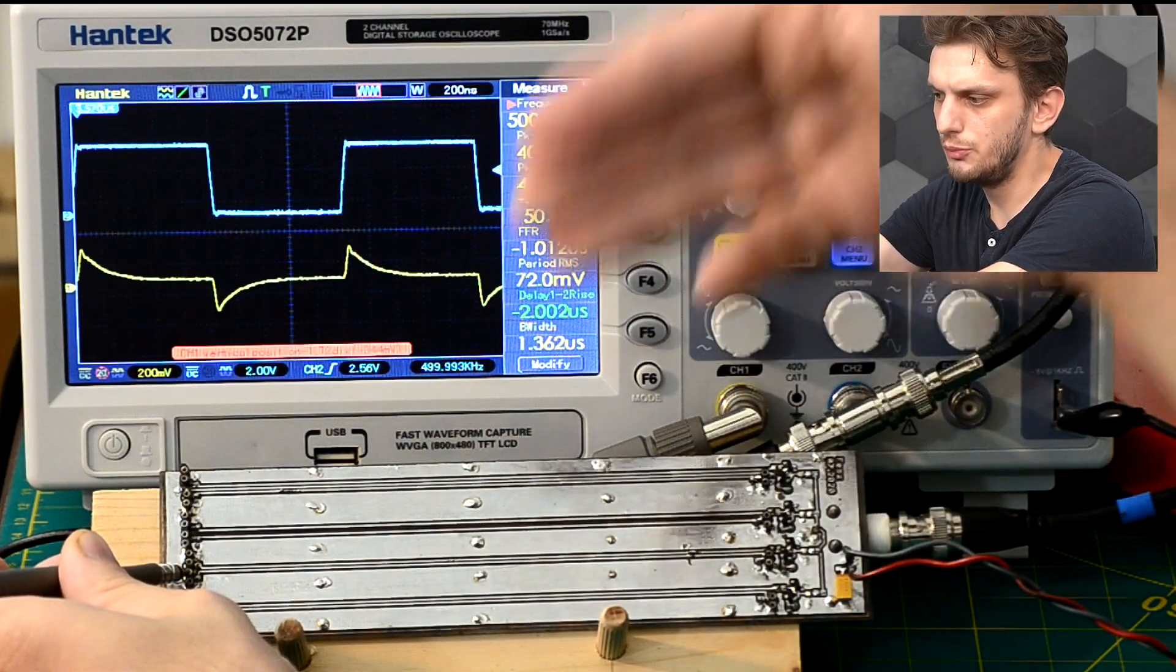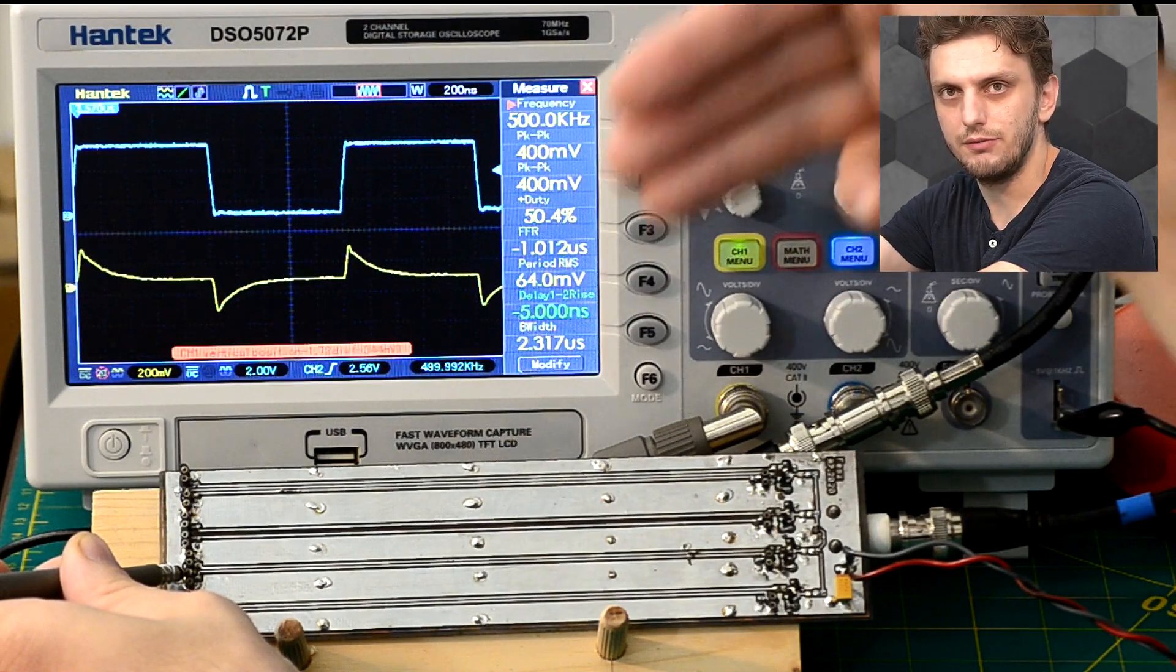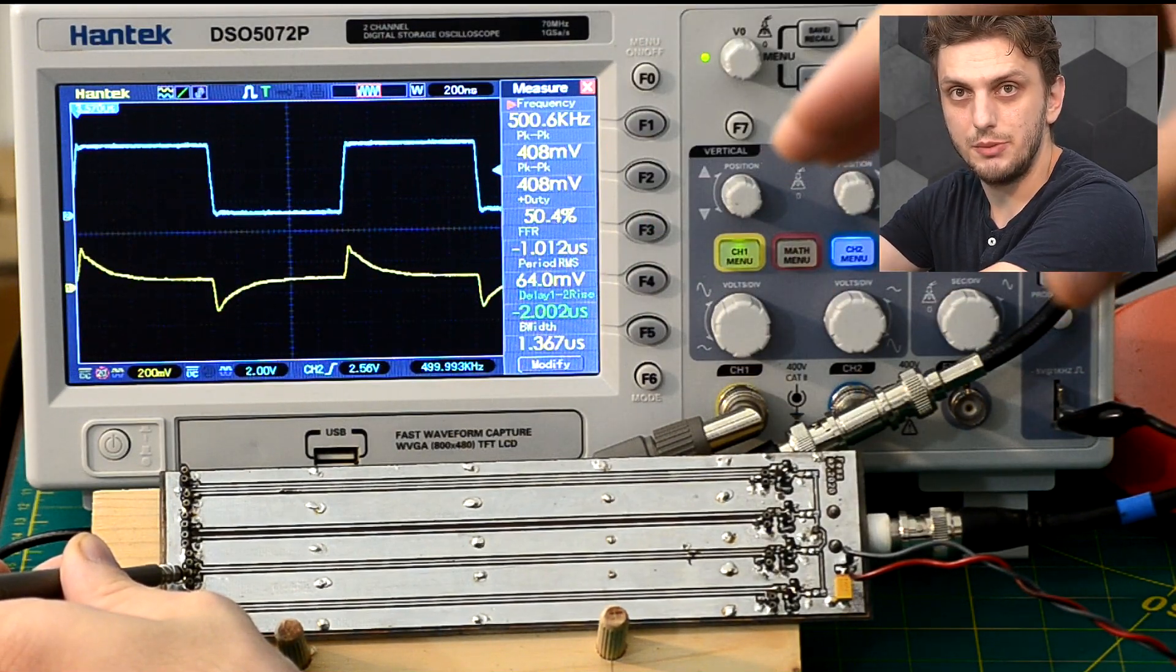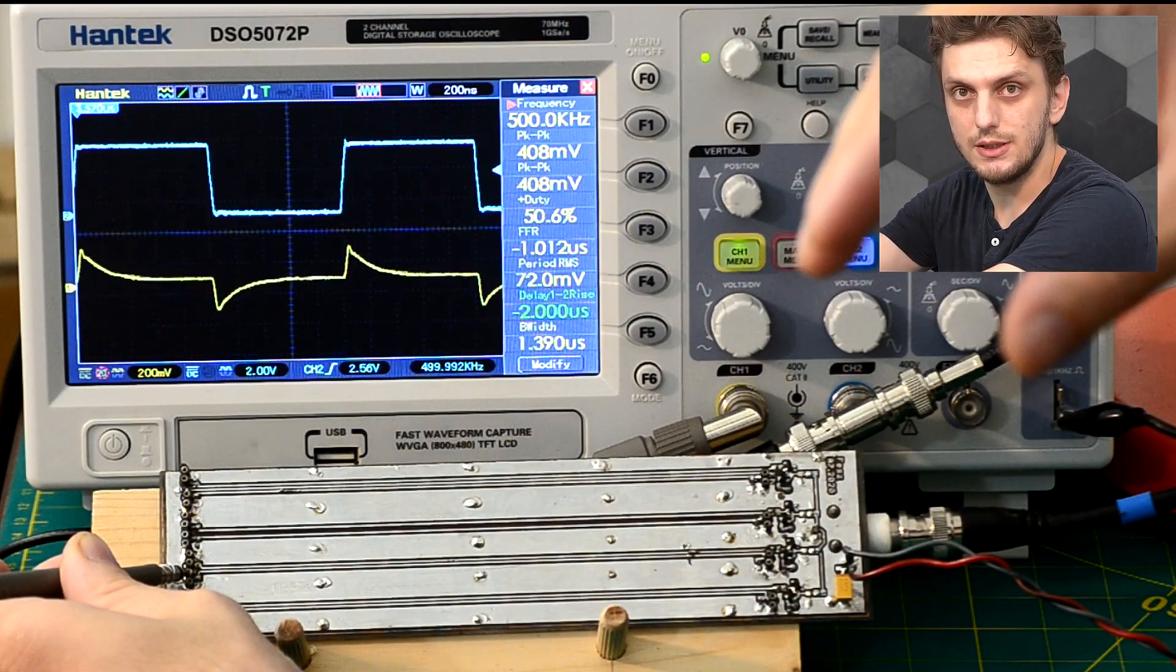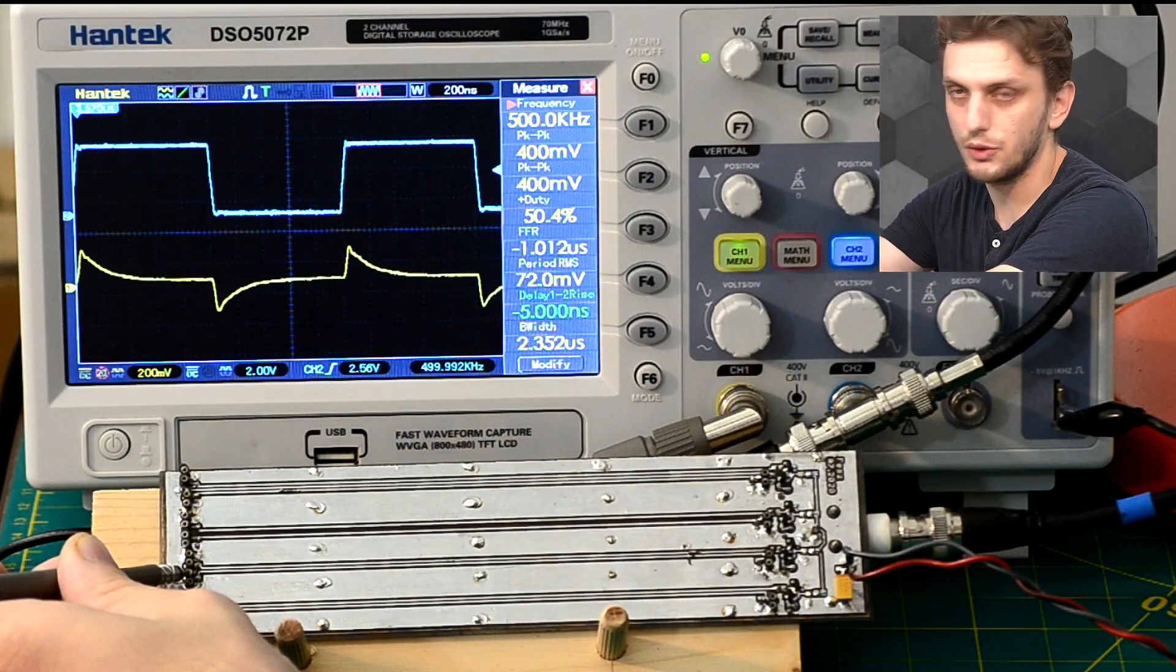So basically what we've built here is a capacitive divider. One of the capacitors being the capacitance in between the traces, the other being between the trace and the ground.